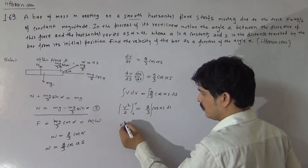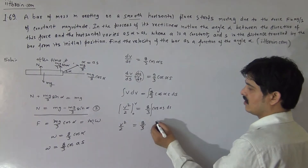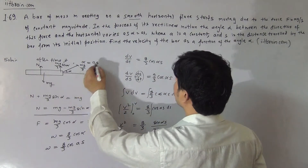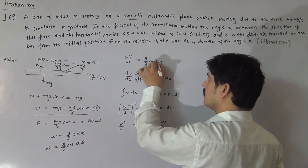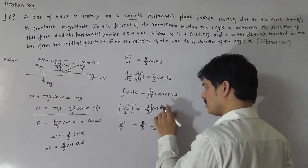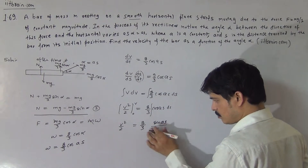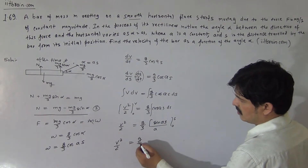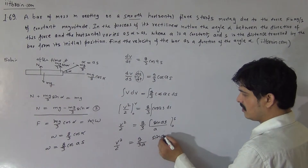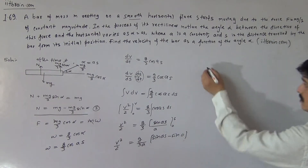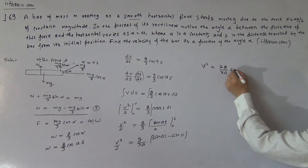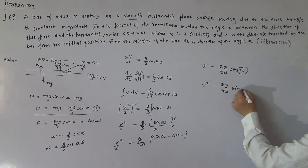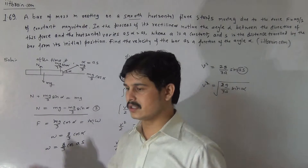Now integrate both sides. v squared by 2 equals g by 3 times the integral of cos(as) ds, with limits for velocity from 0 to v and for s from 0 to s. The integration of cos(as) gives sin(as) by a. Putting in the limits, v squared by 2 equals g by 3a times sin(as) minus sin(0). So the final answer is v squared equals 2g by 3a times sin(as), and since alpha equals as, we get v squared equals 2g by 3a times sin alpha. Therefore velocity v equals the square root of 2g by 3a times sin alpha.